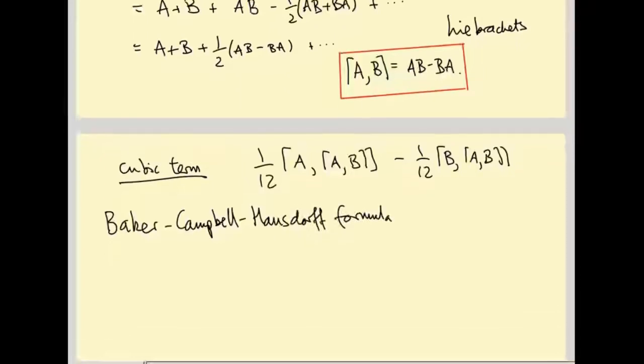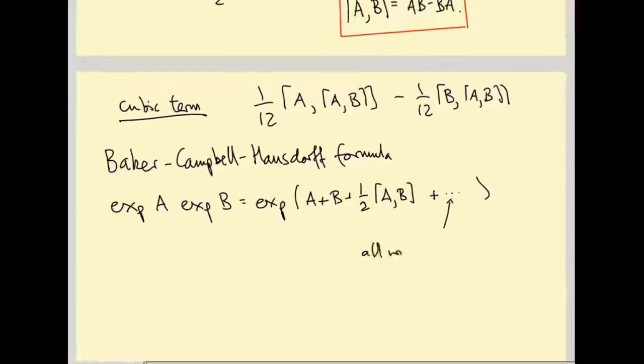So this is the formula that says exp A exp B equals exp of A plus B plus a half A bracket B plus higher order terms, where the higher order terms can all be written in terms of the bracket alone. There is an explicit formula, it's actually not due to Baker-Campbell or Hausdorff, I think it's due to Dynkin, but it's usually called the Baker-Campbell-Hausdorff formula. So we're not going to prove this.